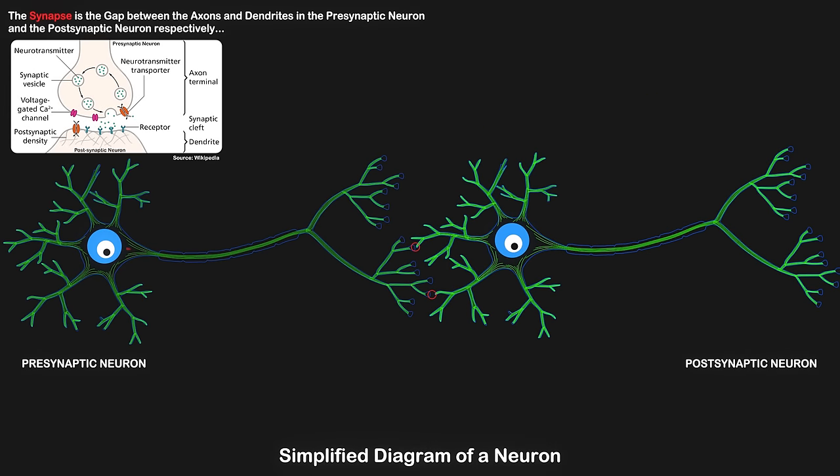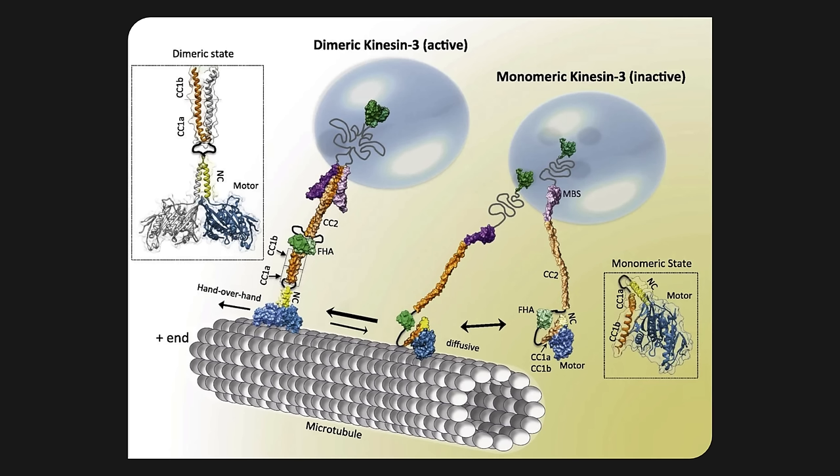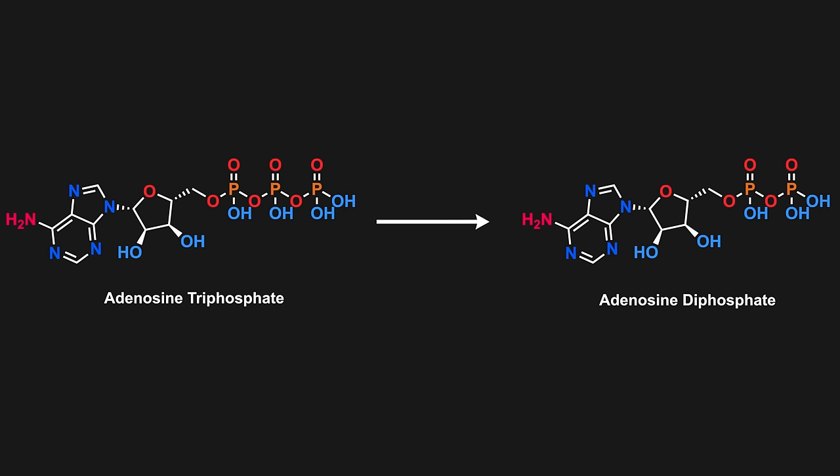To reach the synapse, the transport vesicles need to make their way along the axon. The vesicles don't move along the cytoskeleton on their own, they require chungus motor proteins such as dynein and kinesin. These proteins convert ATP, also known as adenosine triphosphate, into ADP, adenosine diphosphate.